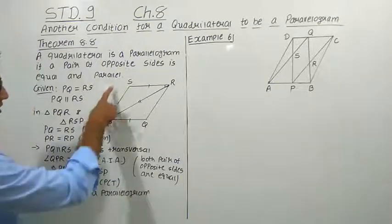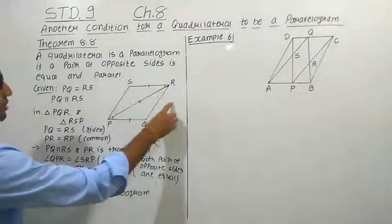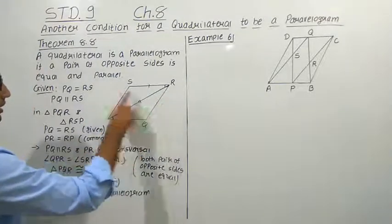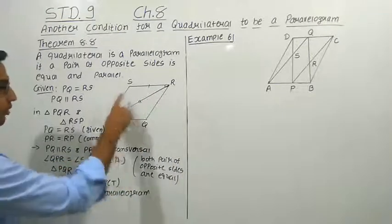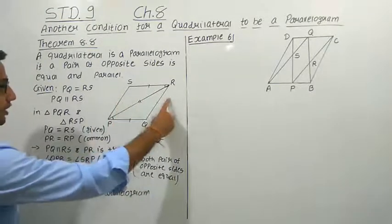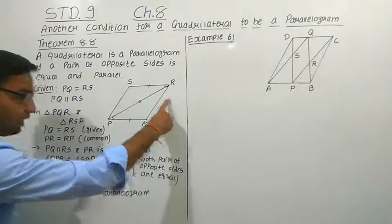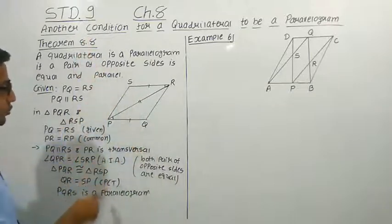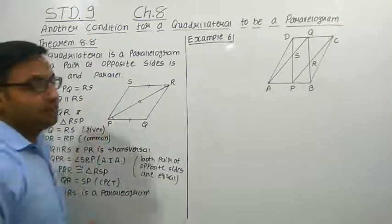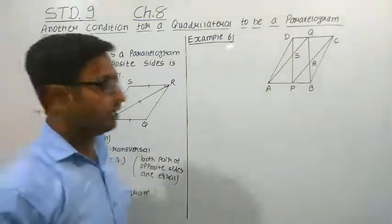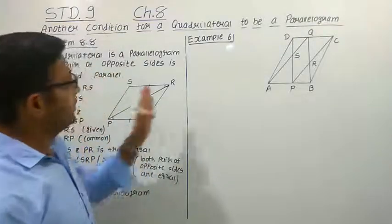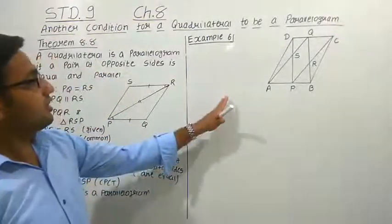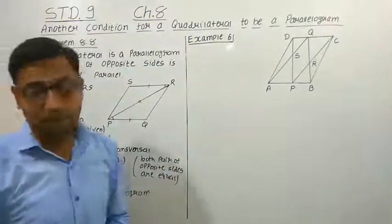Also, we can consider the other pair of opposite sides, that is PS and QR. If we are given that PS and QR are equal and parallel, then we can prove in the same way that PQRS is a parallelogram. Now let us use this theorem and study example number 6.